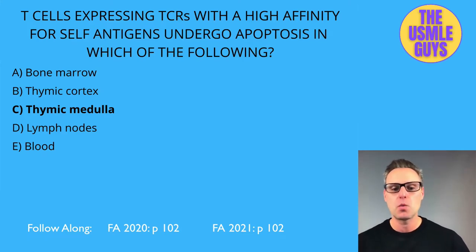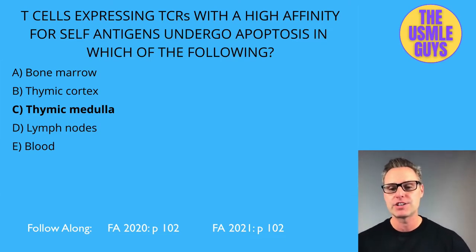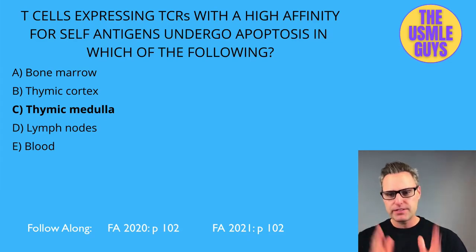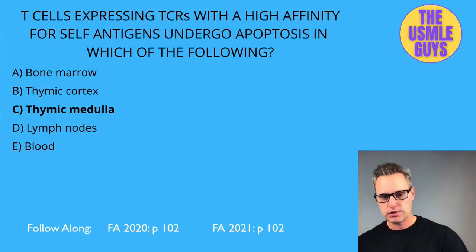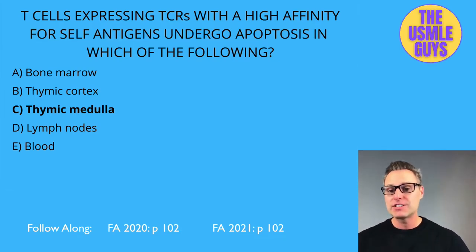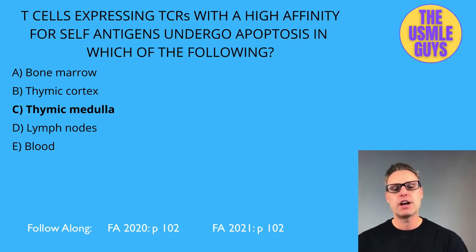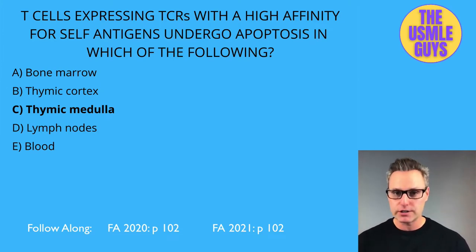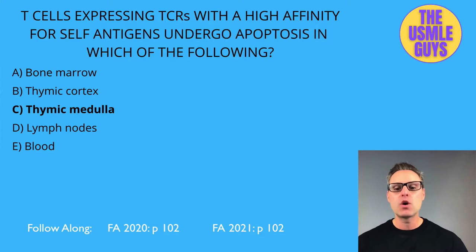Then, in the medulla of the thymus, T-cells with TCRs of high affinity for self-antigens will either undergo apoptosis or become regulatory T-cells — this is negative selection. At this point we have both CD8 and CD4 T-cells, which move into the lymph nodes. There, helper T-cells secrete proteins inducing Th1 and Th2 cells; Th1 cells produce IL-2 and interferon gamma, which activate macrophages and cytotoxic T-cells.